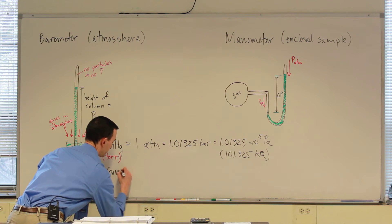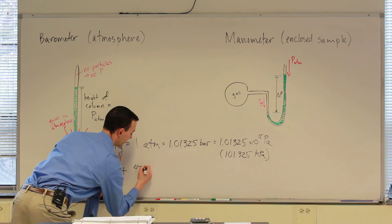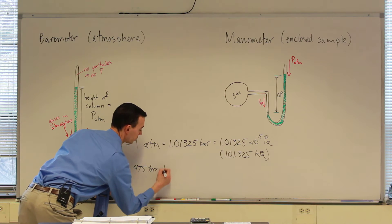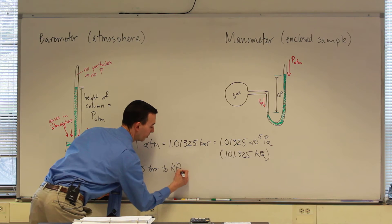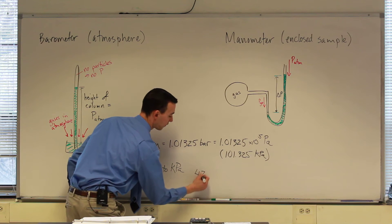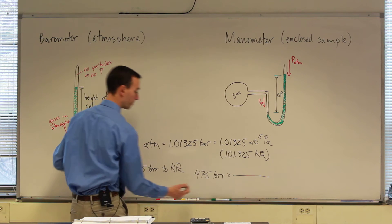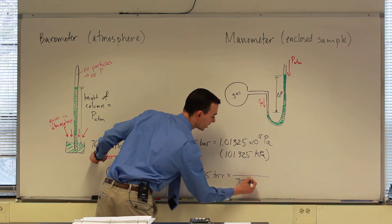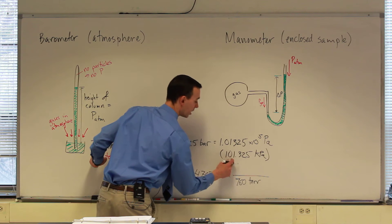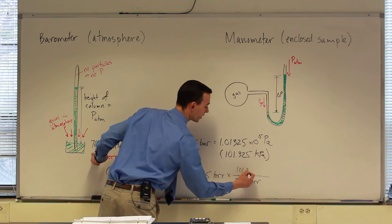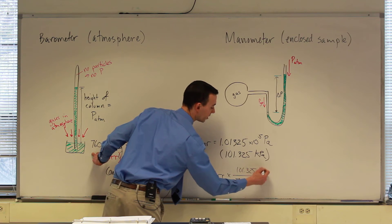So let's do a quick conversion here. Let's convert 475 torr to kilopascals. So we would do 475 torr times, what's our relationship? In the denominator, 760 torr are equal to 101.325 kilopascals.